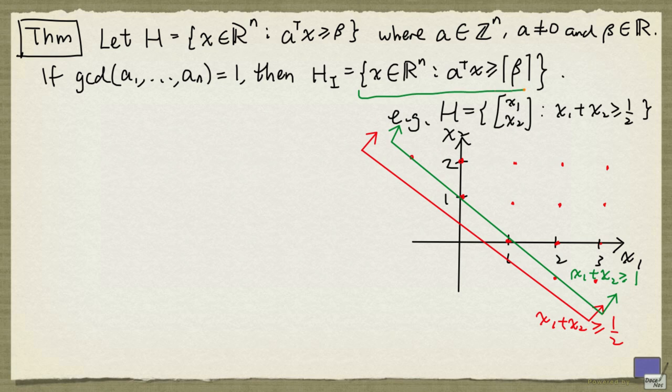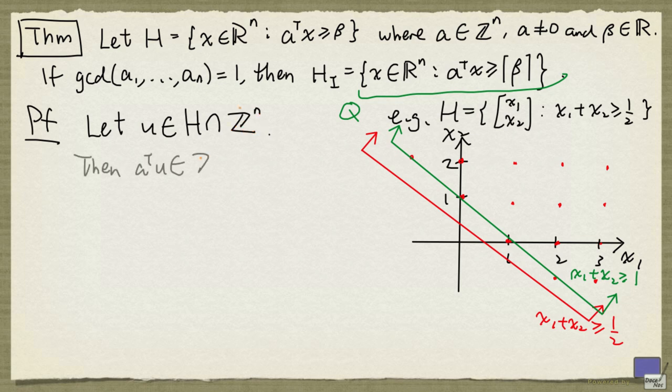The statement of this theorem looks reasonable, but the proof is actually not that trivial. So let's begin by calling this set Q. So we want to show that H_i is equal to Q. One direction of inclusion is easy to see.